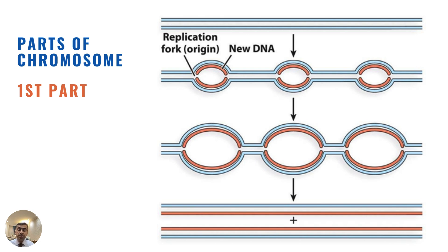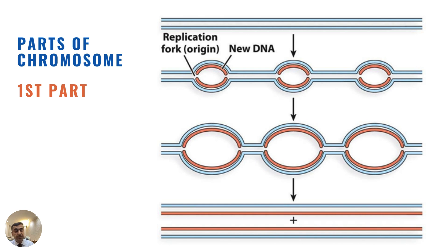The first part of a chromosome is called the replication of origin. It allows duplication of our DNA. DNA not only carries genetic information but can also duplicate itself. Eukaryotic DNA is very large and has many origins of replication to ensure that the entire chromosome is replicated rapidly. By comparison, bacterial DNA has only a single origin of replication.